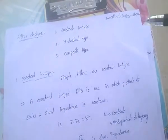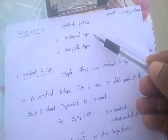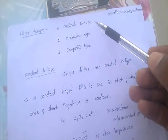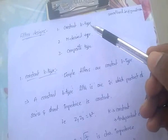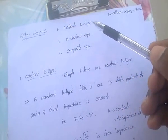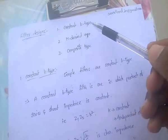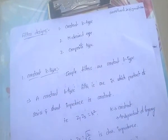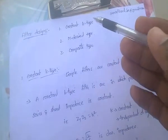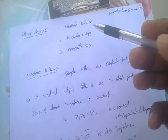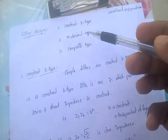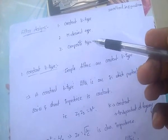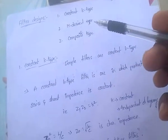There are mainly three types of filter designs. First: constant K type filter. Second: M-derived type filters. Third: composite type filters. In case of constant K type filter, these are basic type filters. But these basic type filters have some disadvantages — it does not attenuate after cutoff frequencies rapidly, and it does not provide impedance matching constant throughout the attenuation. To overcome these disadvantages of constant K type filter, M-derived filters are developed. The M-derived filter is a modification of constant K type filter. And composite type filters are the combination of both constant K type and M-derived type filters.